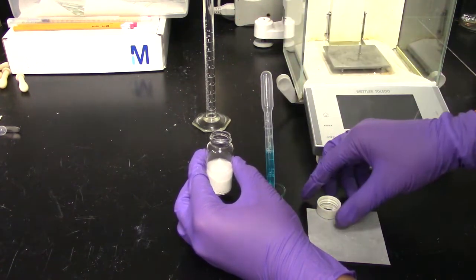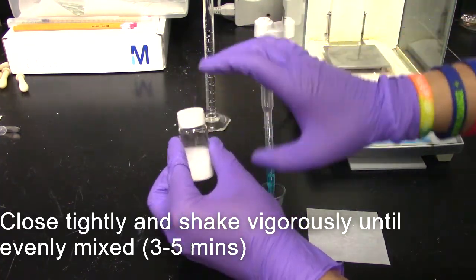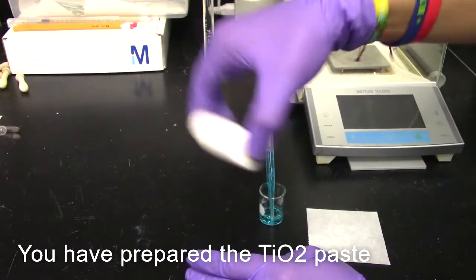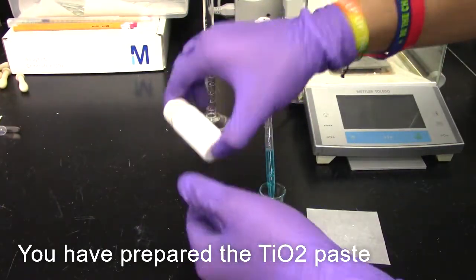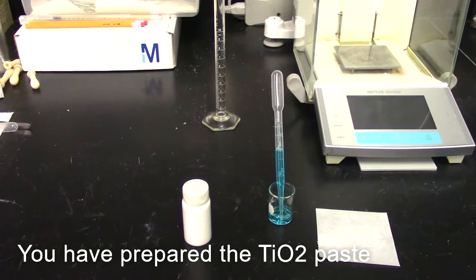After adding 2 to 3 drops, close the vial tightly and shake vigorously until evenly mixed. The TiO2 paste should have a relatively viscous and slurry consistency.